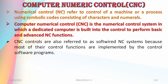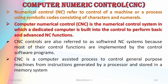By changing the codes in the software you can control anything and everything of the CNC. CNC is basically a computer-assisted process to control general purpose machines from industries, from instructions generated by a processor and stored in the memory of the system.